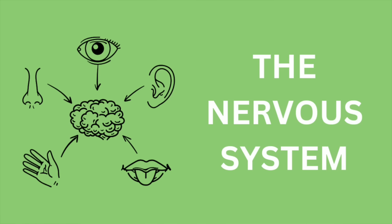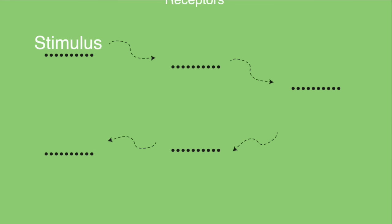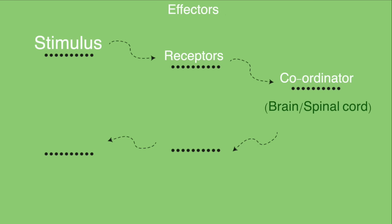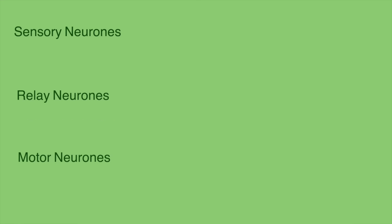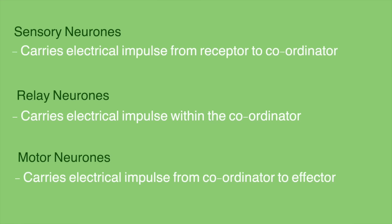Next, you need to know about the nervous system. There are 5 components to this: the stimulus, the receptors, the coordinator, the effectors, and then the response. Within this process, there are also neurons, which are the sensory neurons, the relay neurons, and the motor neurons.